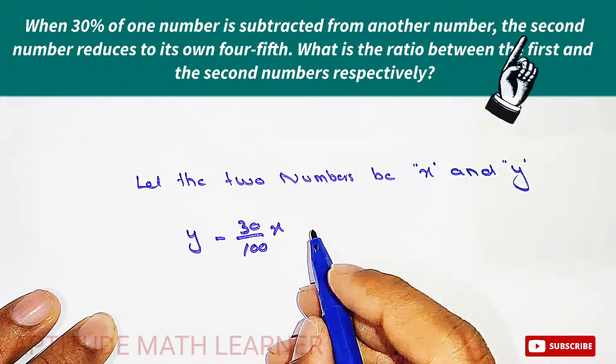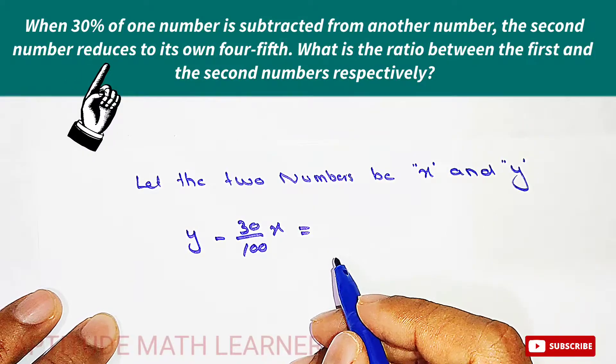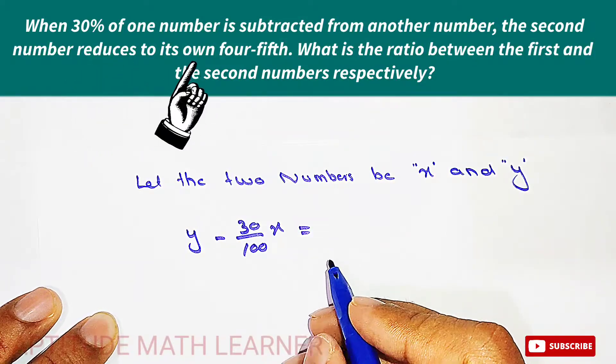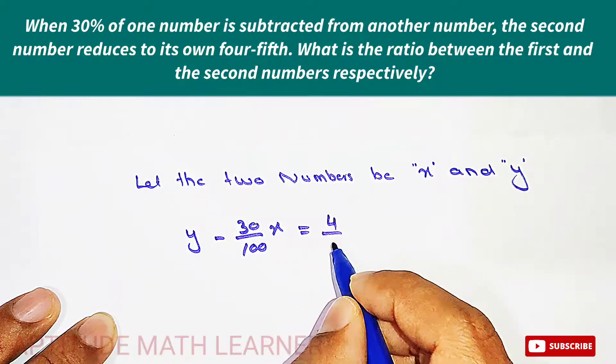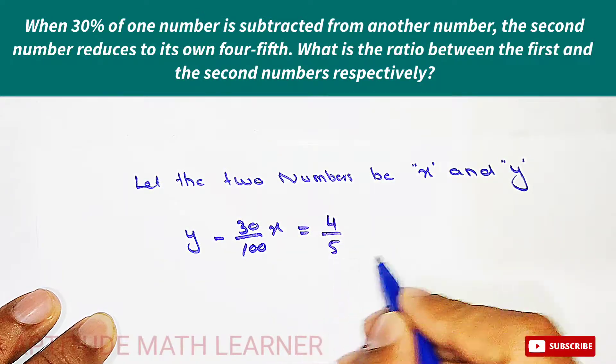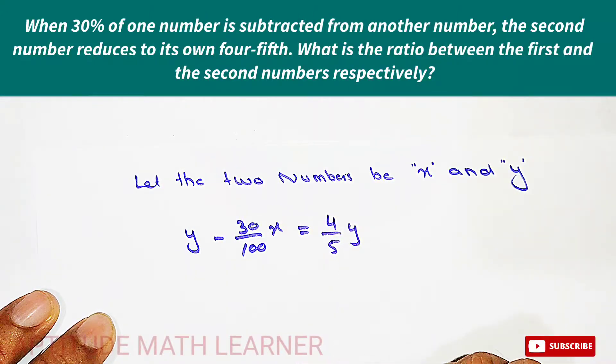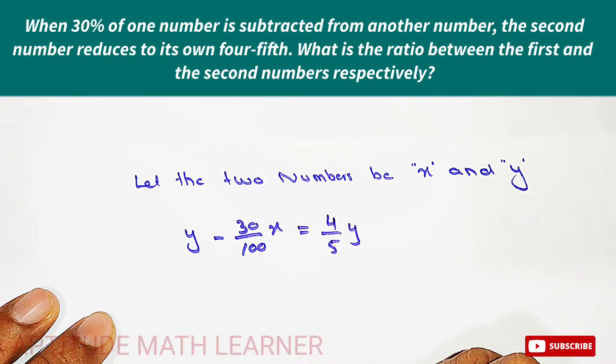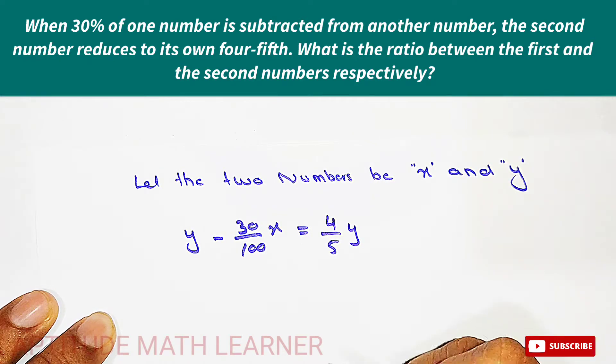And the second number reduces, so the result of the second number will be four-fifths. So the second number has been now reduced to four-fifths and the second number we are having is y. I hope till here you have completely understood. Now the next step we have to find out the ratio between the first and the second, between x and y.